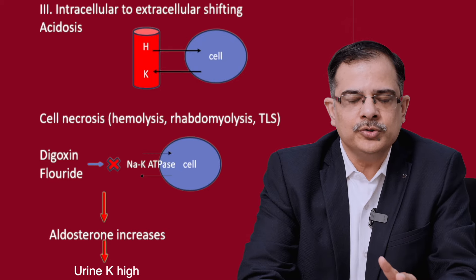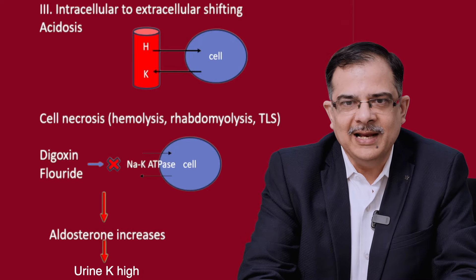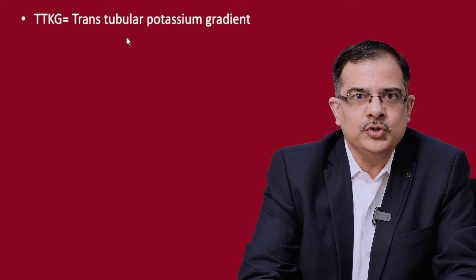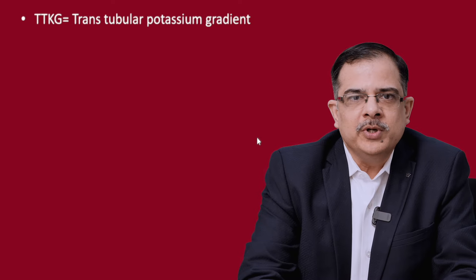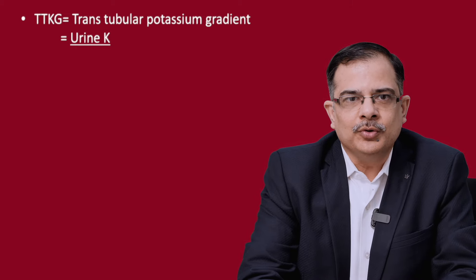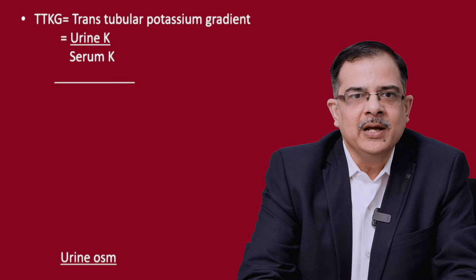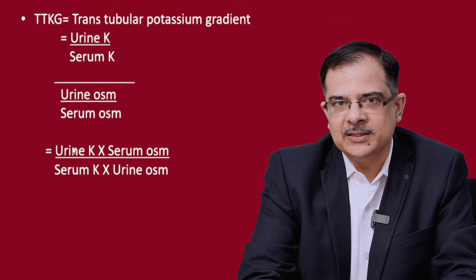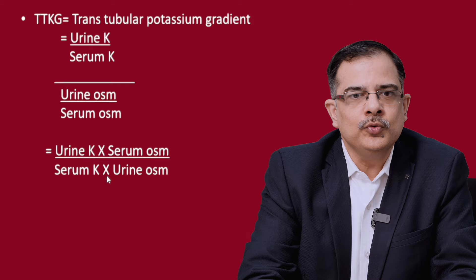To summarize, cause number one and cause number three have high urinary potassium levels, while cause number two will have low urinary potassium levels. This brings us to the transtubular potassium gradient (TTKG) — the gradient between tubular potassium and its capillary potassium. The formula is: urinary potassium divided by serum potassium, all divided by urinary osmolality divided by serum osmolality. In a single expression: urinary potassium × serum osmolality, divided by serum potassium × urinary osmolality.